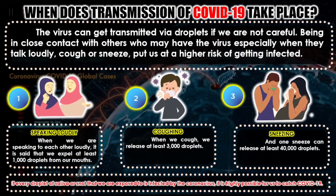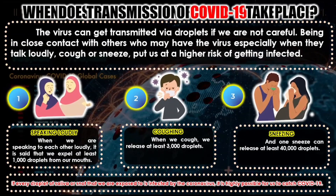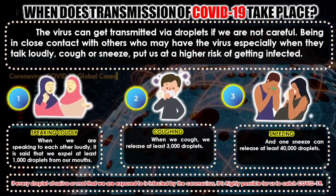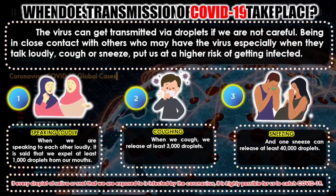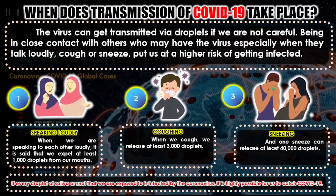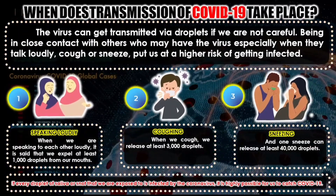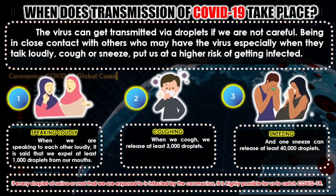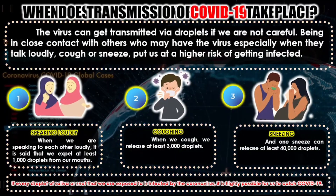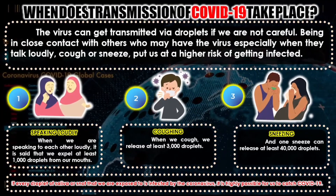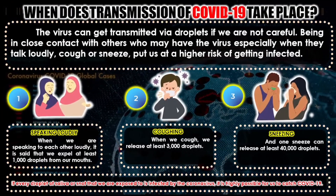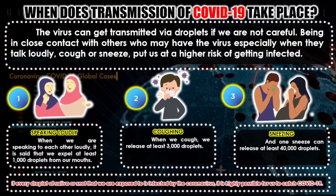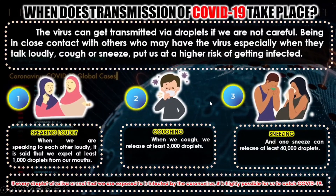When we are speaking to each other loudly, it is said that we expel at least one thousand droplets from our mouths. When we cough, we release at least three thousand droplets. And one sneeze can release at least 40,000 droplets. If every droplet of saliva or snot that we are exposed to is infected by the coronavirus, it is highly possible for us to catch COVID-19.